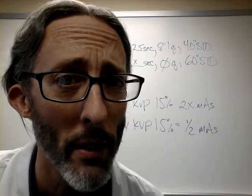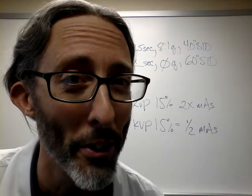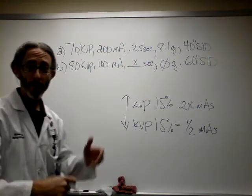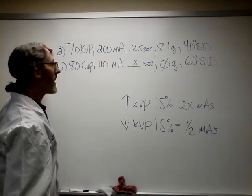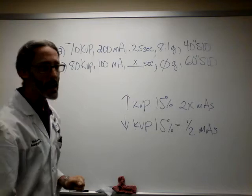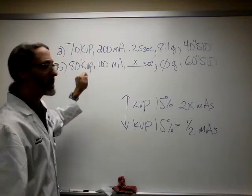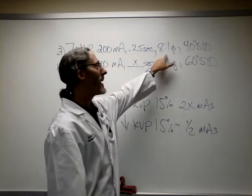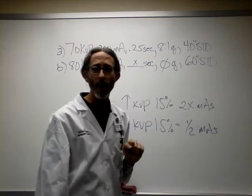How would you like to solve some complex exposure problems? Let's get started. Alright, what do we have on the board today? We have two techniques. Technique A consisting of 70 kVp, 200 ma, .25 seconds, an 8 to 1 grid and 40 inches SID.